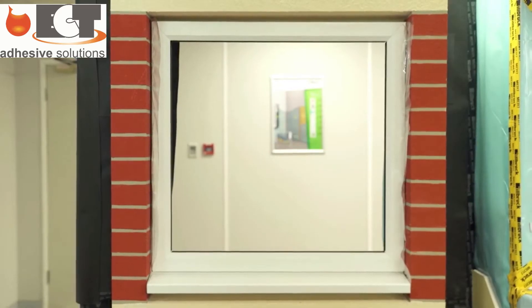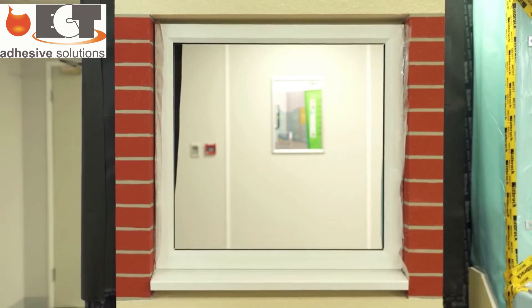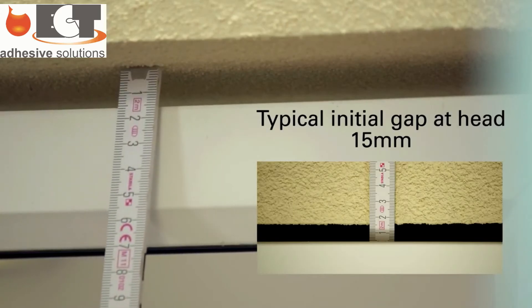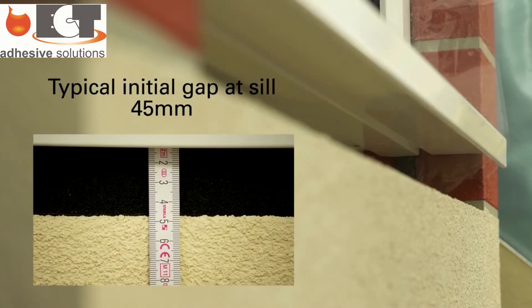The gap required at the head and sill is dependent on the amount of settlement which is calculated by the timber frame designer. At higher levels on the building, a typical gap at the head would be 15 millimeters and at the sill 45 millimeters.